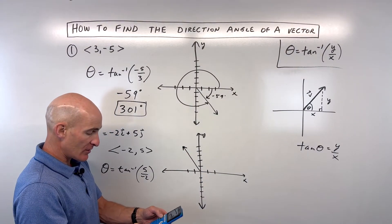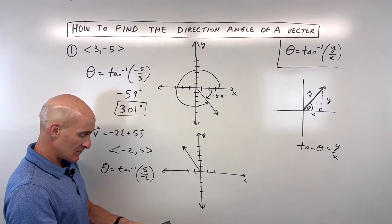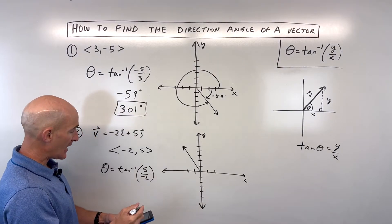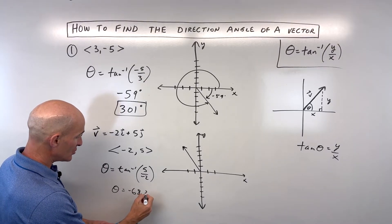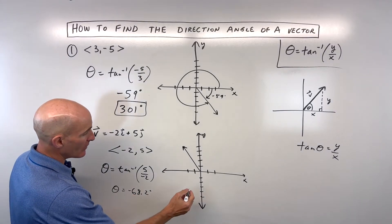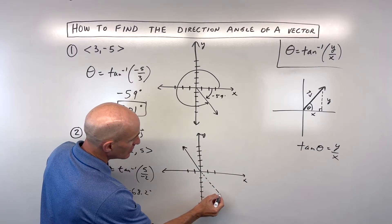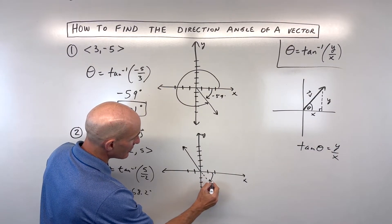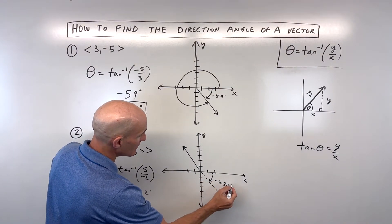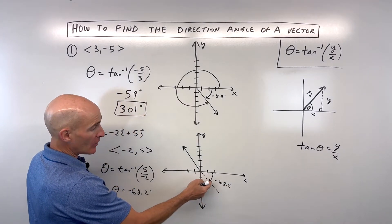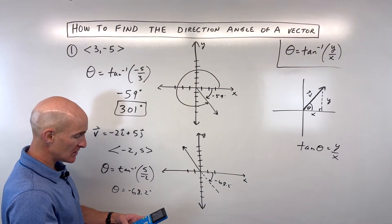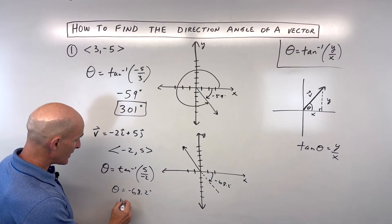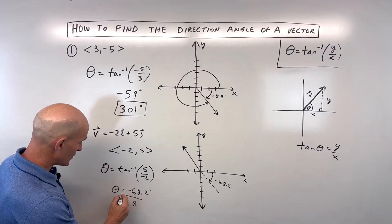When I go to the calculator and calculate the tangent inverse, I'm getting an angle that's negative 68.2 degrees. Now, negative 68.2 is actually right here, clockwise. I don't want that angle. I want this angle right here. What I'm going to do is I'm going to add 180 degrees, which gives me 111.8 degrees.